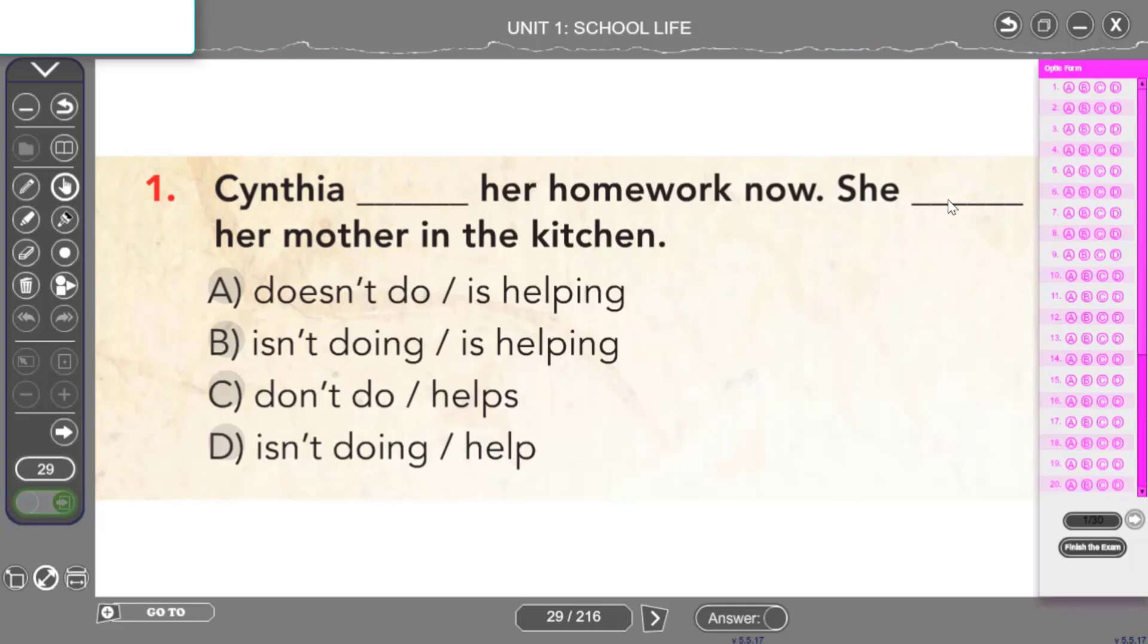Bakıyorum cümlemiz olumsuzmuş. Yani ne yapmamız gerekiyor? Isn't doing her homework now. Cynthia şu anda ödevini yapmıyor dememiz gerekiyor. B ve D şıklarında isn't doing yapısını görüyoruz. İkinci kısma bakmamız lazım şimdi. She, her mother in the kitchen. O ödev yapmıyor, annesine mutfakta yardım ediyor diyeceğim. Yardım ediyor derken nasıl bir yapı kullanıyordum? She is helping demem gerekiyor. Cynthia isn't doing her homework now. She is helping her mother in the kitchen olması gerekiyor cümlemizin.